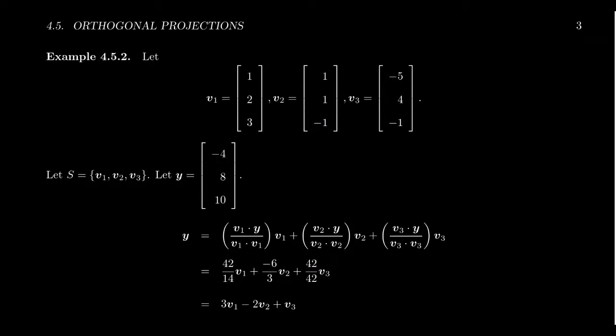Let's see it in practice. Consider the following set. V1, V2, V3. V1 is 1, 2, 3. V2 is 1, 1, negative 1. And V3 is negative 5, 4, negative 1. You can very quickly see that this is an orthogonal set of vectors.